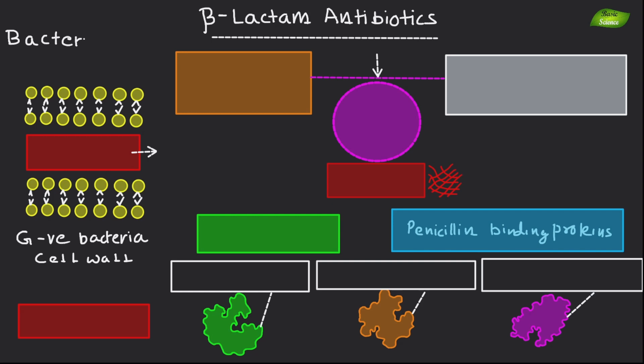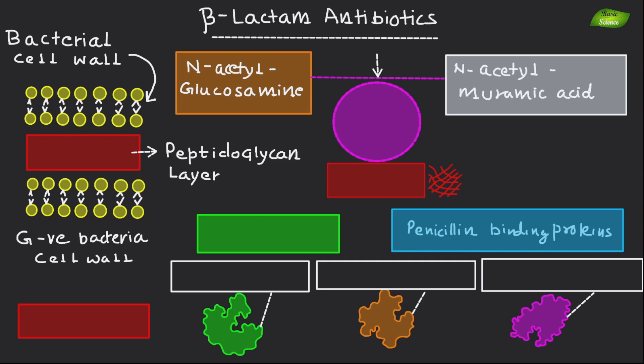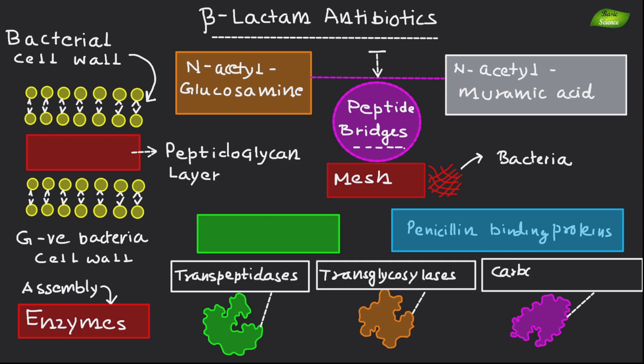The main component of most bacterial cell walls is the peptidoglycan layer. It is made up of chains of disaccharide residues of N-acetyl glucosamine and N-acetyl muramic acid. These chains are cross-linked by peptide bridges, forming a rigid mesh around the bacteria. The assembly of these chains and cross-links is facilitated by enzymes such as transpeptidases, transglycosidases, and carboxypeptidases, which are serine proteases also known as penicillin binding proteins, or PBPs.